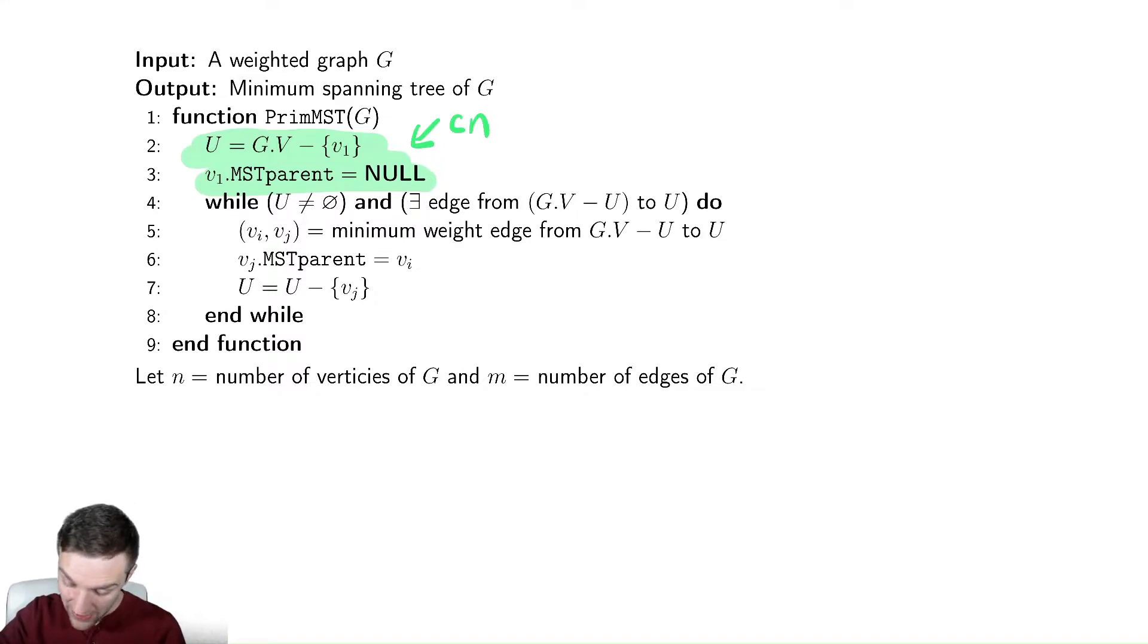The while loop, how many times does it run? Well, it says while u isn't empty and at every single step we're removing one vertex from u. While there exists an edge, let's just assume there's always an edge, this would run n minus 1 times because we were removing one vertex every single time. It would in fact actually run n times.